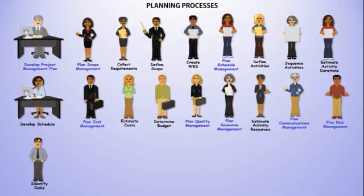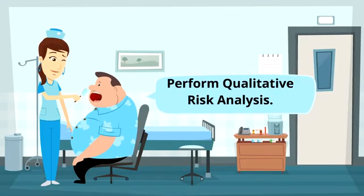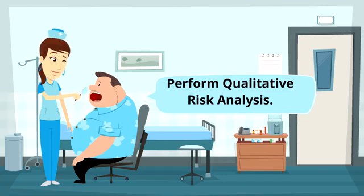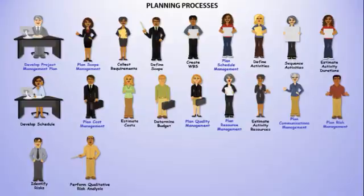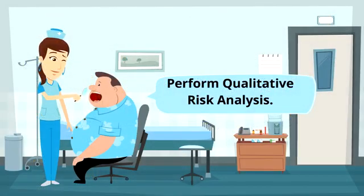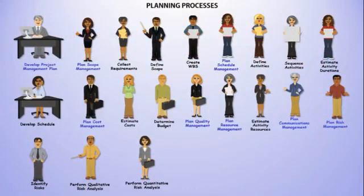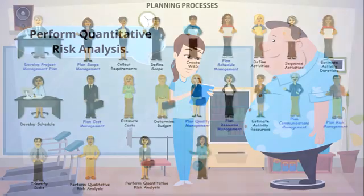The next process is Identify Risks, where any risks — positive or negative — are identified. The next process is Perform Qualitative Risk Analysis, where the team analyzes risks from a qualitative standpoint. Think of this as a multiplication of a probability rating and an impact rating — probability times impact gives a risk score, hence a qualitative analysis. The next process is Perform Quantitative Risk Analysis, where the team analyzes risks from a monetary standpoint, a resource hours standpoint, or some other quantitative measure.